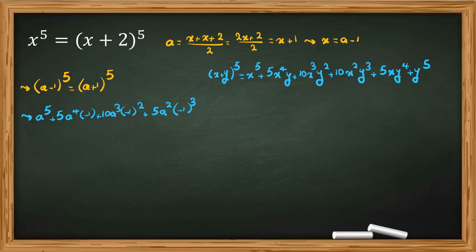A to the 5, 5, a to the 4, 10, a cubed. Oh, I'm sorry. The next one also is 10. It's 10 a squared negative 1 cubed plus 5 a negative 1 to the 4 plus negative 1 to the 5.